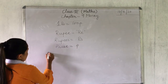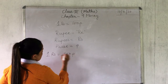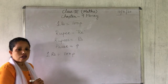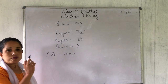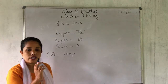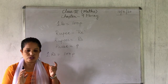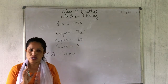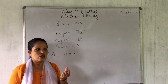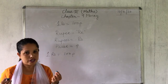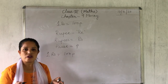1 rupee is equal to 100 paise. Rupee is money. The Indian currency is divided into two forms: one is a note and one is a coin. A note is paper money, and a coin is made of metal.